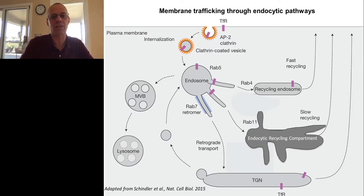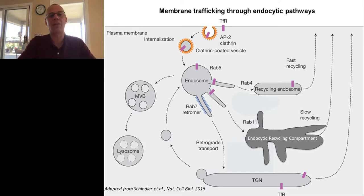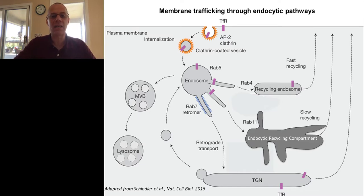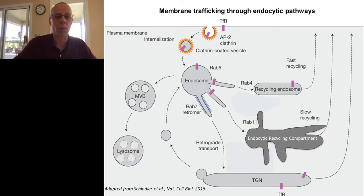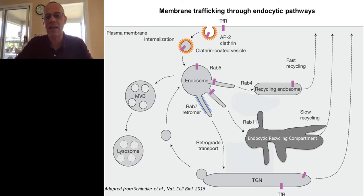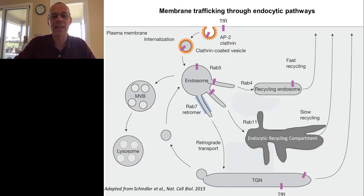Key to many of these trafficking pathways is a large family of proteins known as the Rab family of GTP-binding proteins. There are about 60 Rab proteins known in mammalian cells. Examples include Rab5, Rab7, and Rab4 — proteins that play key roles in forging the identity of individual endosomal and membrane-bound compartments in the endocytic pathways, and in controlling transport from point to point within these compartments. For example, Rab11 is a key protein known to be involved in controlling recycling of receptors back to the plasma membrane.